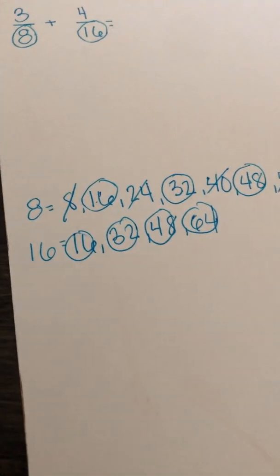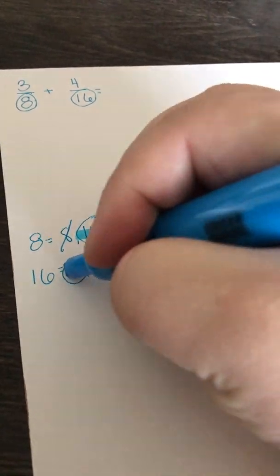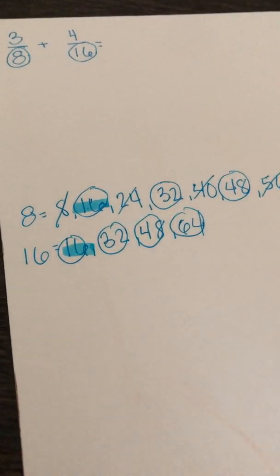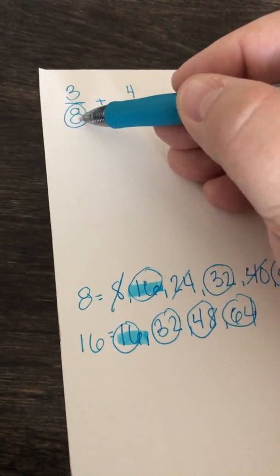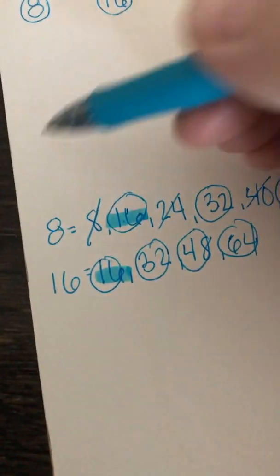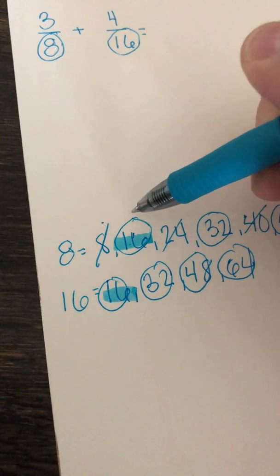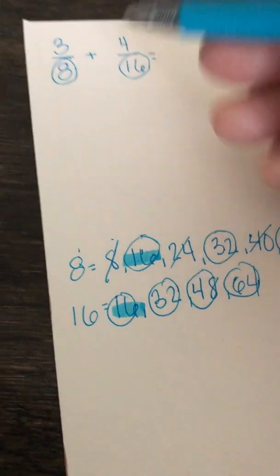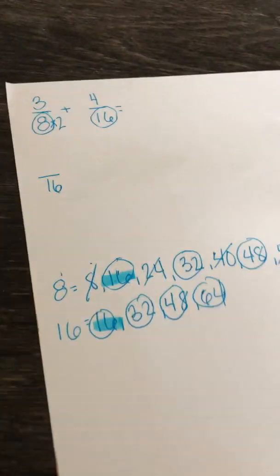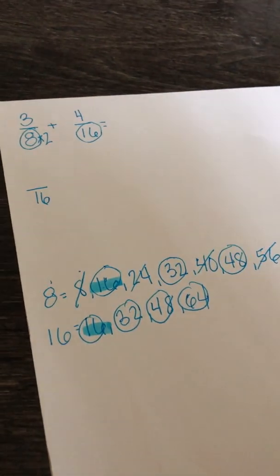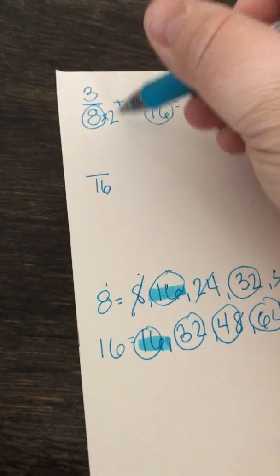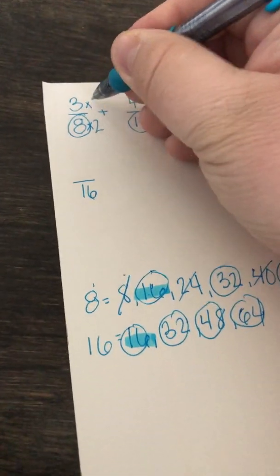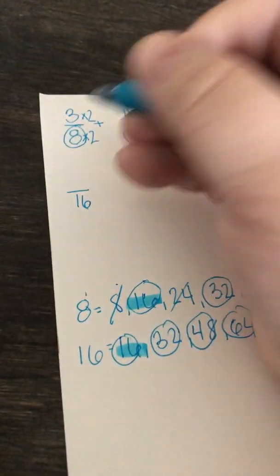So we are wanting to make our denominators 16. Now if we do that, what do I need to times 8 — my denominator — to get 16? Let's see how many times I skip counted: 1, 2. So 8 times 2 would be 16. Now if you've been listening — what we do to the denominator, we need to do to the numerator. So we did 8 times 2, so now we need to do times 2 up here. 3 times 2 is 6.